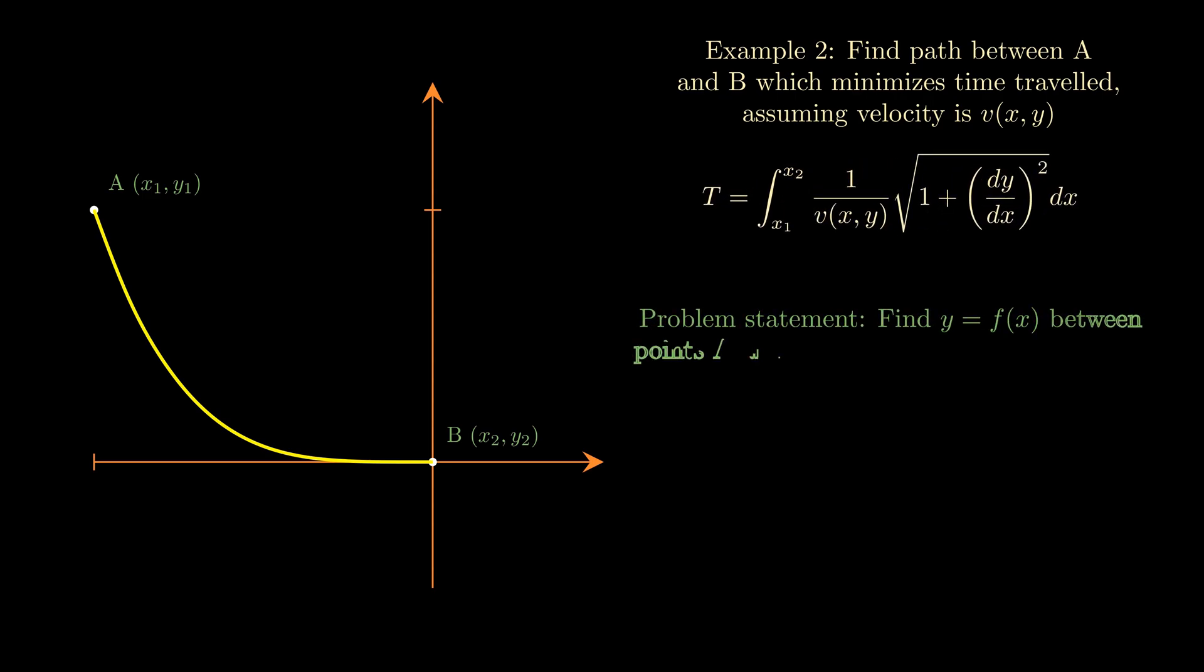This time our problem statement requires that we minimize the functional T by finding the function f(x) that results in the shortest time traveled between A and B. This is also known as the brachistochrone problem for the case of a particle falling under gravity on a path from A to B. Hopefully these two examples have given you an idea of the types of problems that calculus of variations deals with.